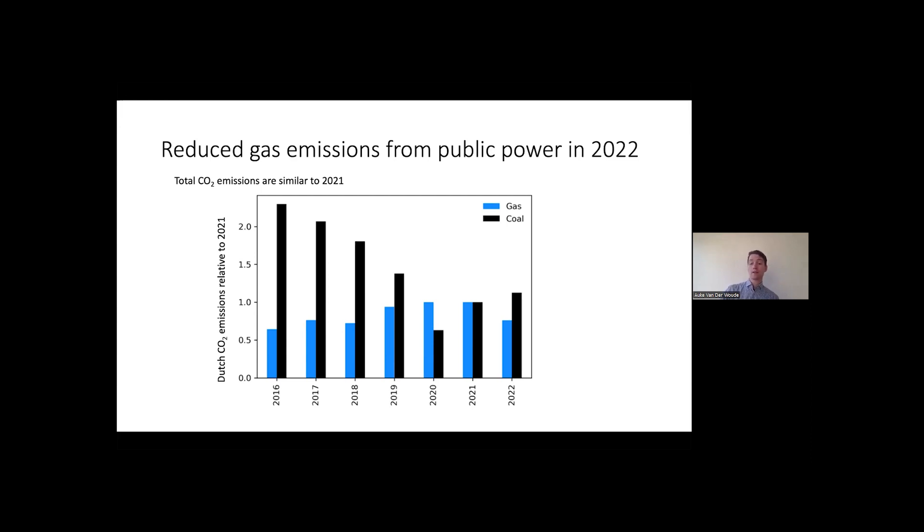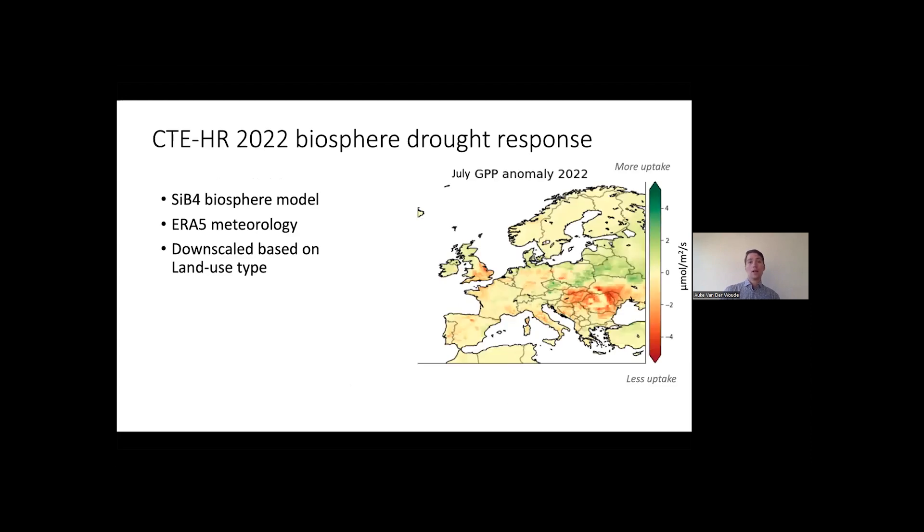So that was our little segue into the anthropogenic emissions. Let's go back to the drought response, because that is the main topic of my talk here. And to really appreciate what I'm going to show you, I will tell you first what we did to get to this drought response, this biosphere module in our CTE-HR system. We used the SIP4 biosphere model. That is just a computer model that takes in meteorology. We take that from the ERA-5 model and it calculates based on incoming solar radiation, temperature, precipitation.